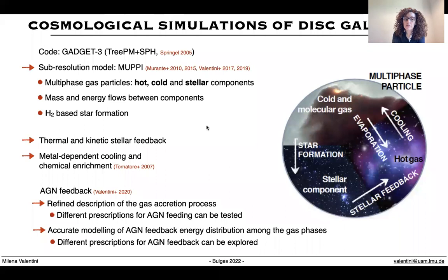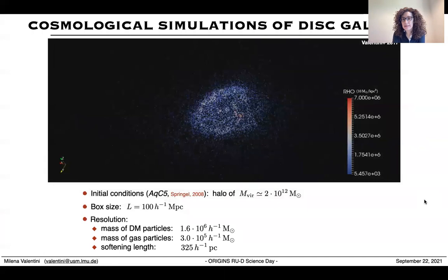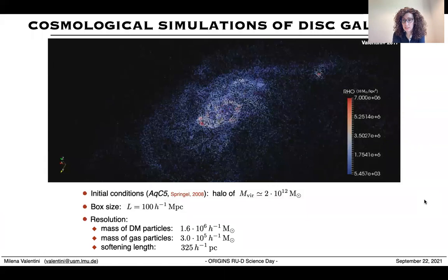As for the initial conditions of our cosmological hydrodynamical simulations, they are zoomed-in and target a Milky Way-sized halo. This halo is expected to host a spiral galaxy at redshift zero, also because it is characterized by a quite low redshift merging history. We carried out a comparative study.